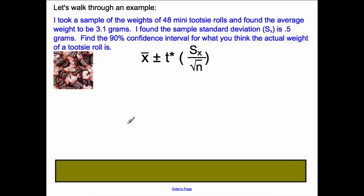Let's walk through an example. I took a sample of weights of 48 mini Tootsie Rolls and found the average weight to be 3.1 grams. On the package, it says they should be about 3, but I'm not sure about that. So I'm going to test it. I found a sample of 48 to be averaged about 3.1 grams. I found the sample standard deviation to be about 0.5. Find the 90% confidence interval for what you think the actual weight of a Tootsie Roll is. So let's fill this number in. Our x-bar is our sample mean, and our sample mean in this scenario was 3.1 grams.